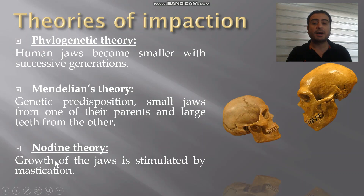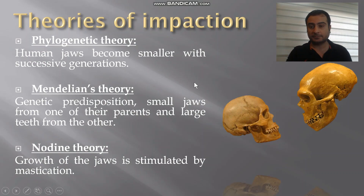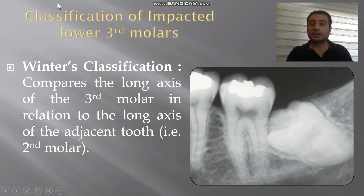The Nodin theory entails that the growth of the jaws is stimulated by mastication. Since the modern diet is considerably softer than what older people tended to eat, modern societies will have smaller jaws, and all this will cause impaction to occur.